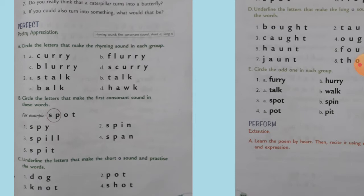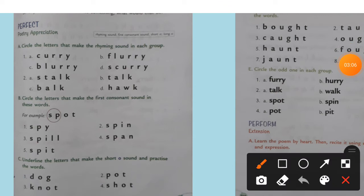Poetry. Rhyming sound first, consonant sound second. Number three, circle the letters that make the rhyming sound in each group.